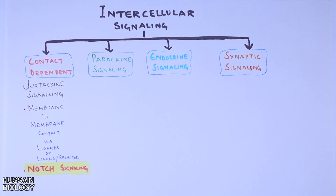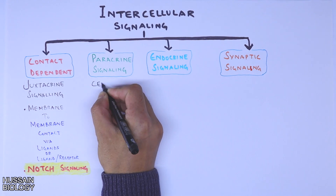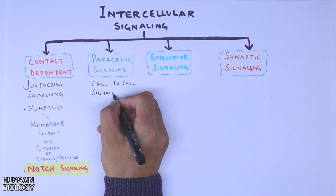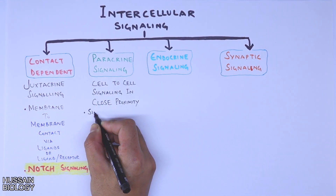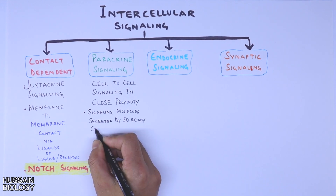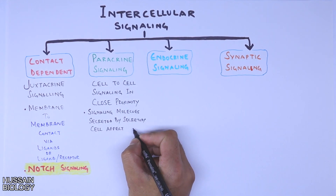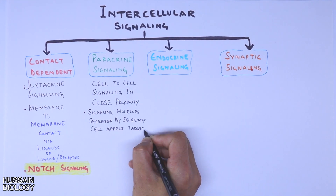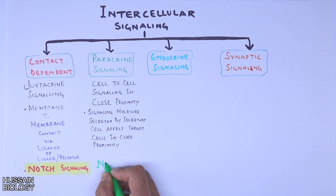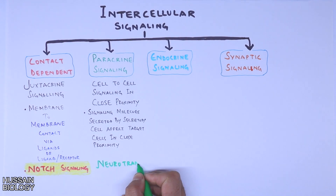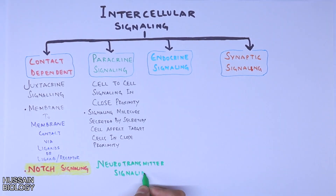Then we have paracrine signaling. It is cell-to-cell signaling in close proximity — one cell secretes a signaling molecule that is received by target cells via receptors to initiate signaling. It must be noted that the signaling molecules affect target cells in close proximity only. This type of signaling is seen in neurotransmitter signaling.